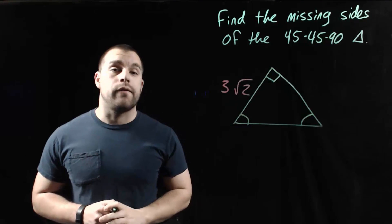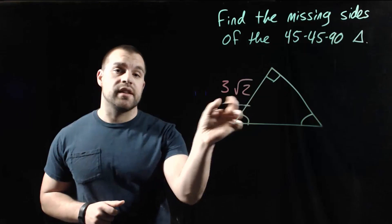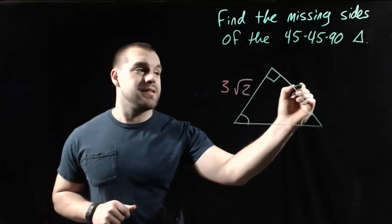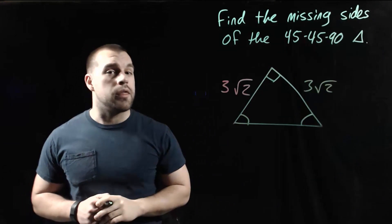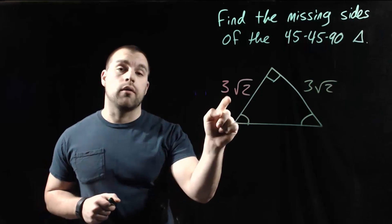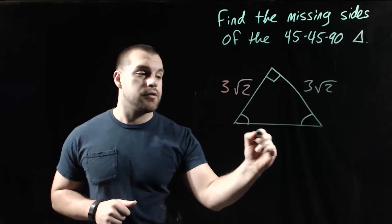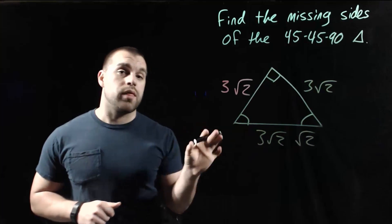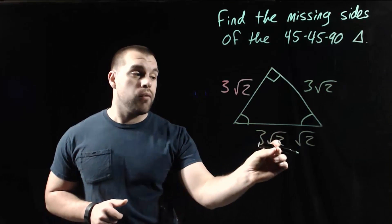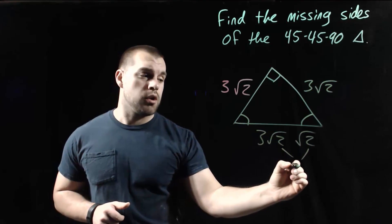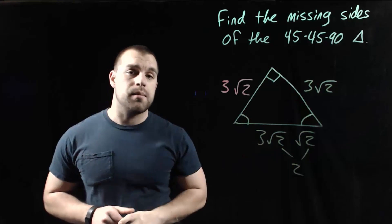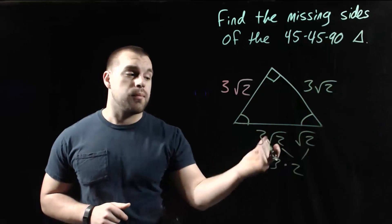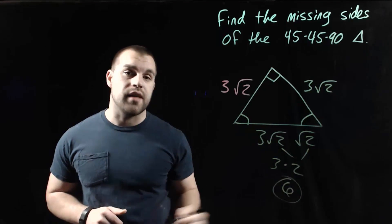In this example, we've got another 45-45-90 triangle. We're given this leg as 3 root 2, so the other leg is also 3 root 2 since it's isosceles. To go from leg to hypotenuse, we take 3 root 2 and multiply by the square root of 2. Root 2 times root 2 gives us 2, and we can't forget the 3 out in front, so 3 times 2 gives us 6 as the length of the hypotenuse.